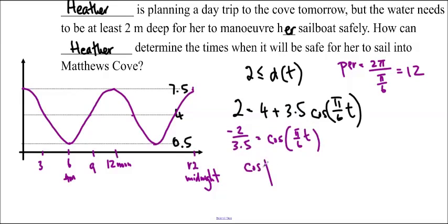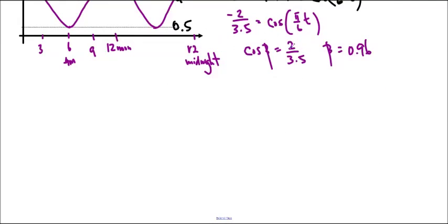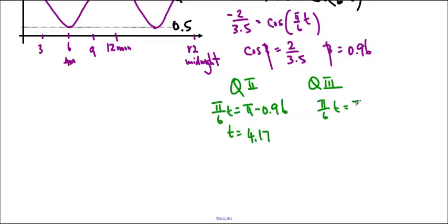So 2 minus 4 is negative 2 divided by 3.5 equals cos pi over 6t. And so we're going to use beta and do the positive version. And according to my calculator, it's 0.96 radians. So then we will solve it. So cos is negative in quadrants, quadrant 2 and quadrant 3. So that means that pi over 6t equals pi minus beta. And if you solve that, you end up with t equals 4.17. And quadrant 3, we'll do pi over 6t equals pi plus 0.96. And if you solve for t here, we'll get t equals 7.83-ish. So those are our two answers.